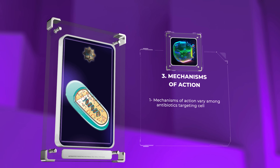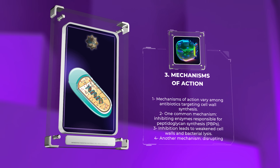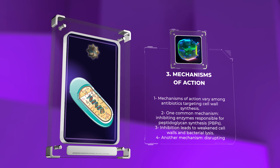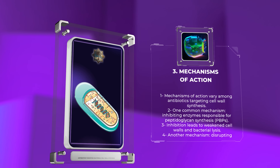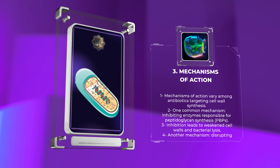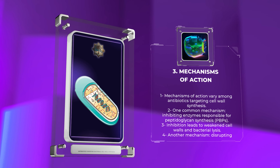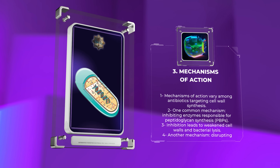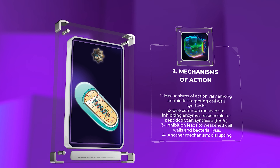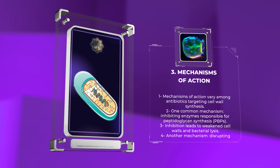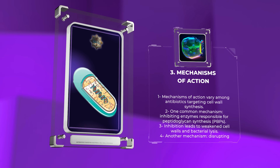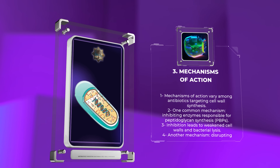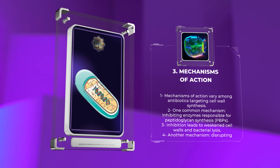The mechanisms of action vary among antibiotics targeting cell wall synthesis. One common mechanism involves inhibiting the enzymes responsible for peptidoglycan synthesis, such as penicillin-binding proteins (PBPs). These enzymes are involved in cross-linking peptidoglycan strands, and inhibition leads to weakened cell walls and bacterial lysis. Another mechanism involves disrupting the transpeptidation reaction, which is essential for peptidoglycan synthesis.